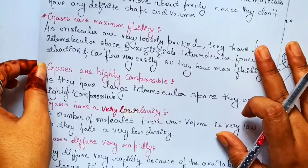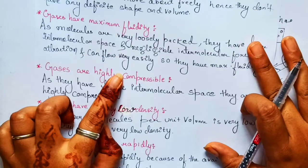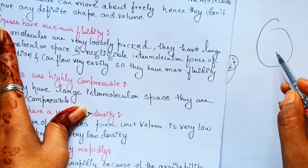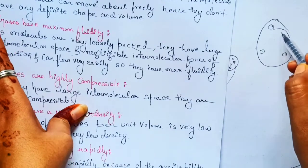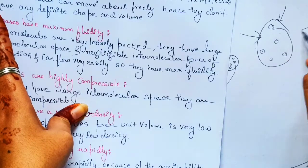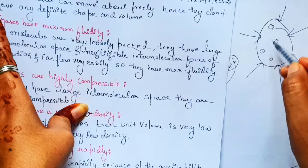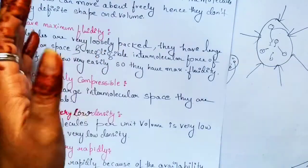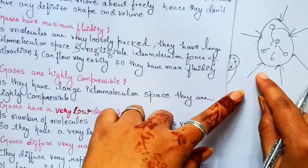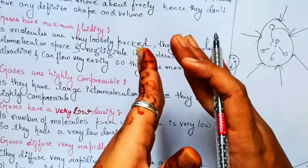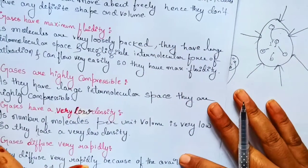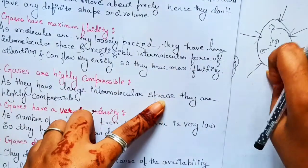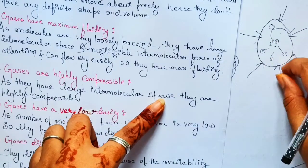Third property: gases are highly compressible. The molecules are loosely packed with a lot of space between them. If we apply pressure from outside, the molecules come closer together. Because there is so much intermolecular space, the gas can be very easily compressed. Gases are highly compressible because of the availability of large intermolecular space.